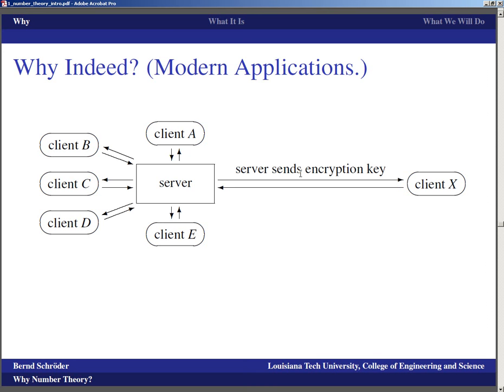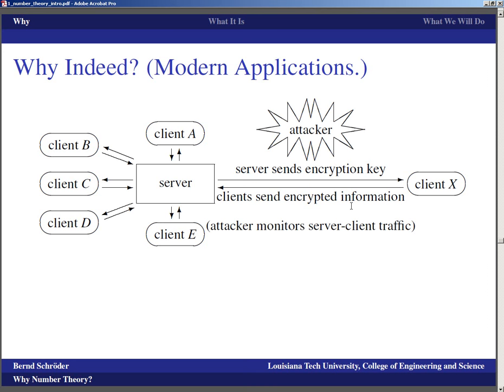Basically when you pay, the server sends you an encryption key, an encryption mechanism. Then you send your credit card in hopefully sufficiently encrypted information so that an attacker who would monitor the server-client traffic can't see the information that goes back and forth. You hope that the information is sufficiently encrypted so the attacker cannot decrypt your credit card number and steal your identity. Now the interesting thing here is, if the attacker sees what encryption key is sent, then the attacker knows how to encrypt the information.